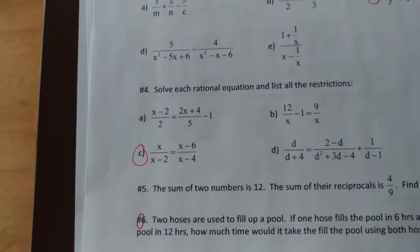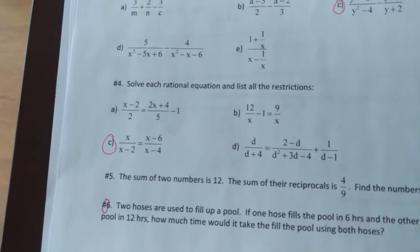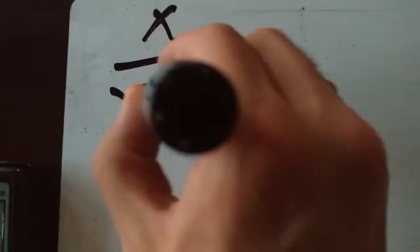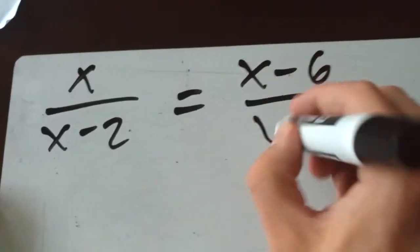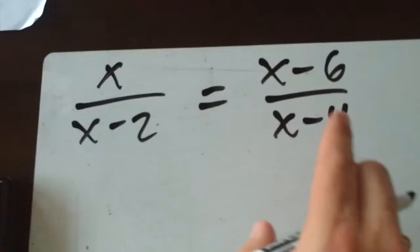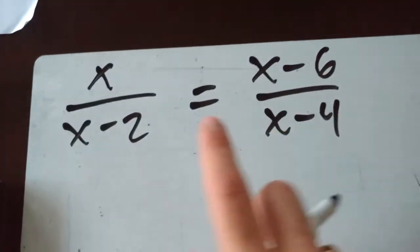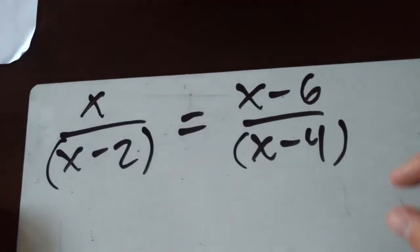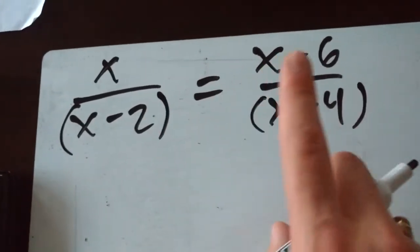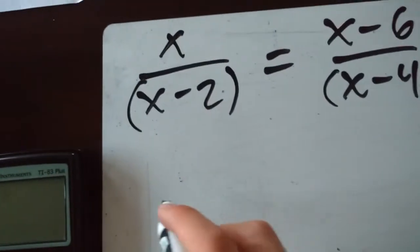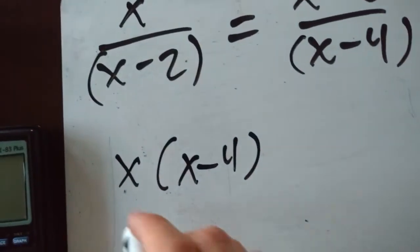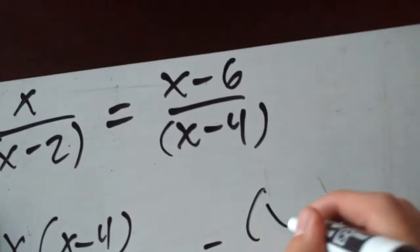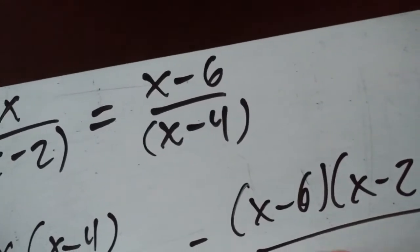We're going to skip to question 4c. All the questions in number 4 are very similar and can be solved the same way. In 4c we have x over (x minus 2) equals (x minus 6) over (x minus 4). We want both denominators to be the same, so we multiply the left side by (x minus 4) on top and bottom, and the right side by (x minus 2) on top and bottom.